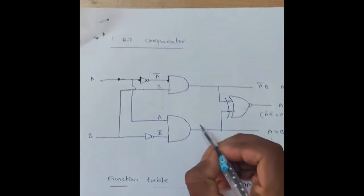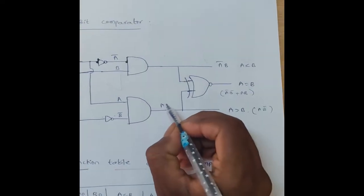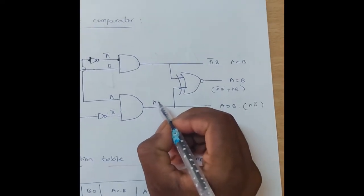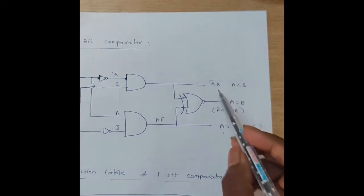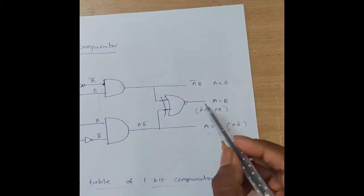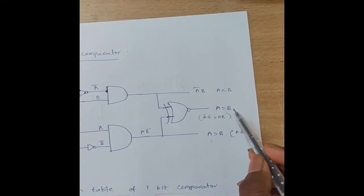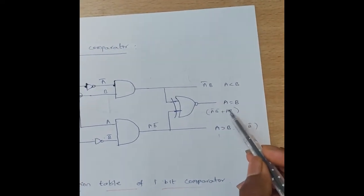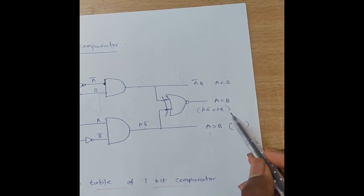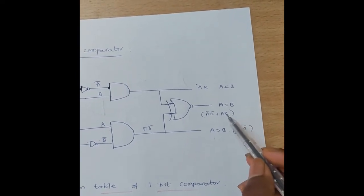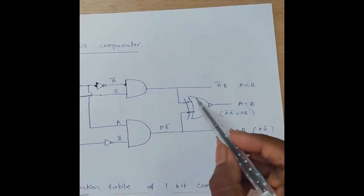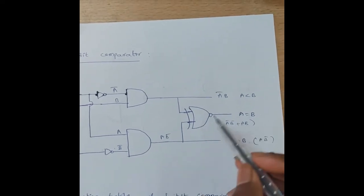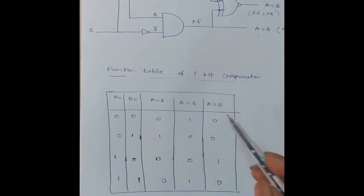The expression for A equal to B is A-bar·B-bar plus A·B, which is equivalent to the XNOR gate. So this is implemented using an XNOR gate.